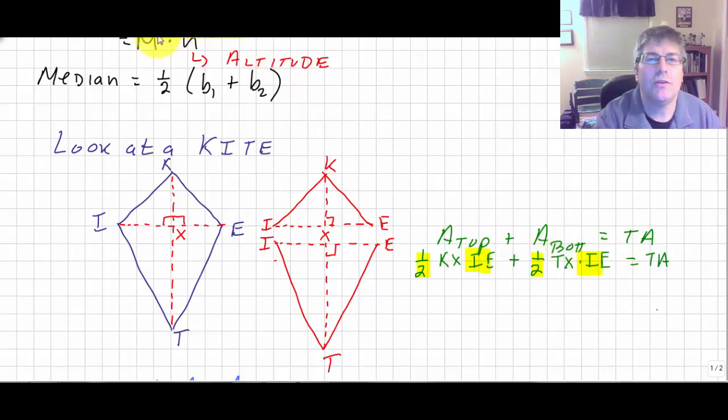So what I could do is I could factor out that common factor, leaving me with one-half IE times KX plus TX.